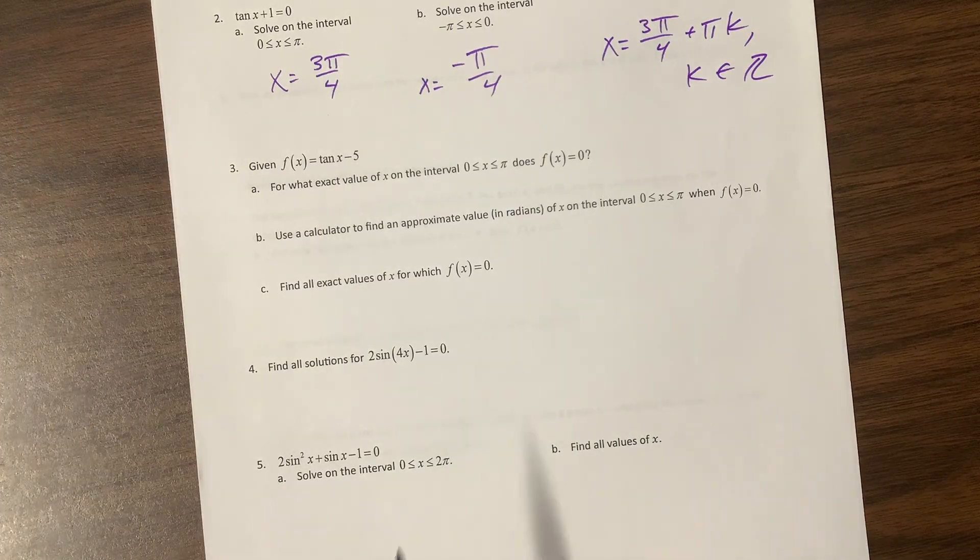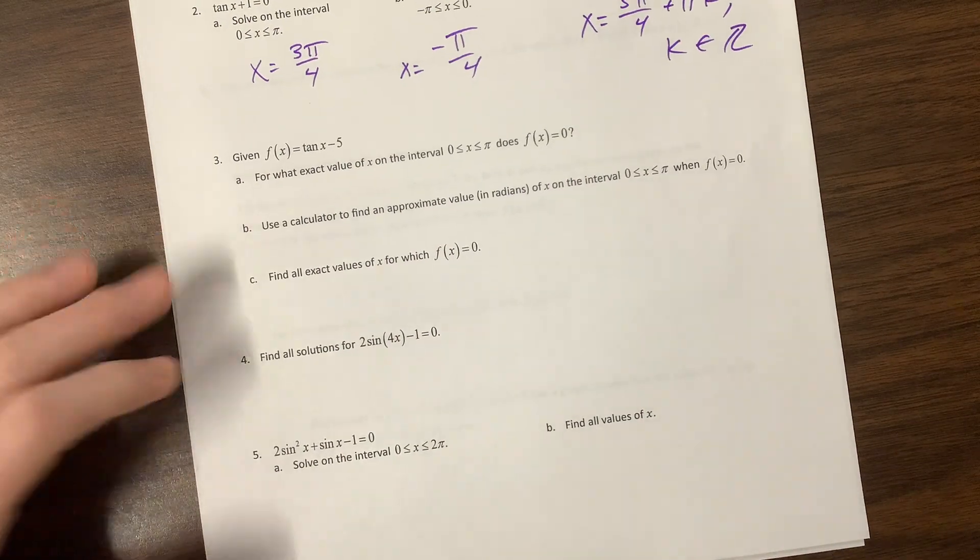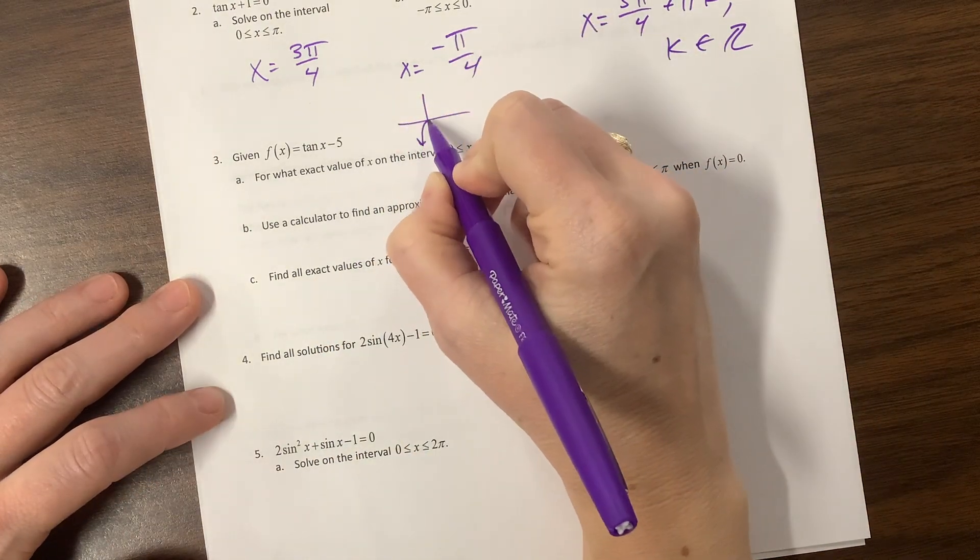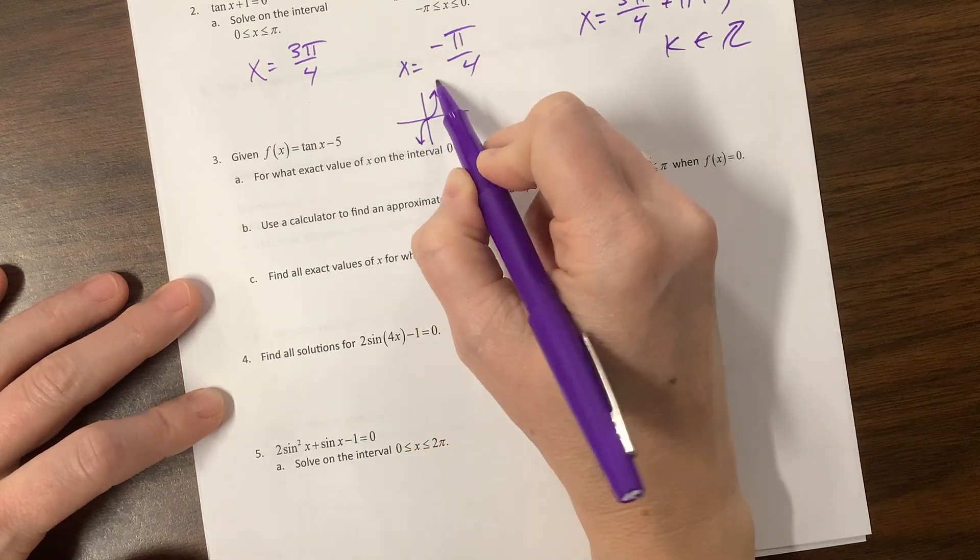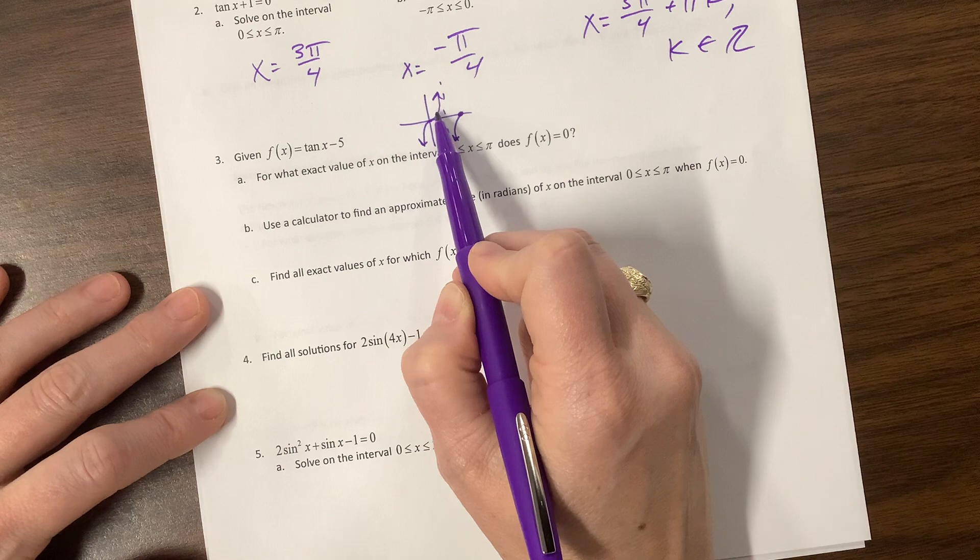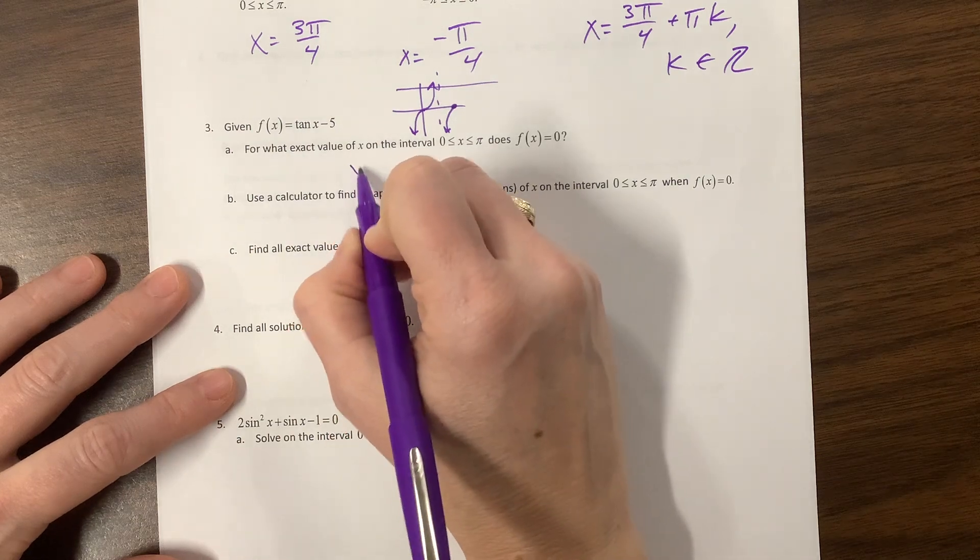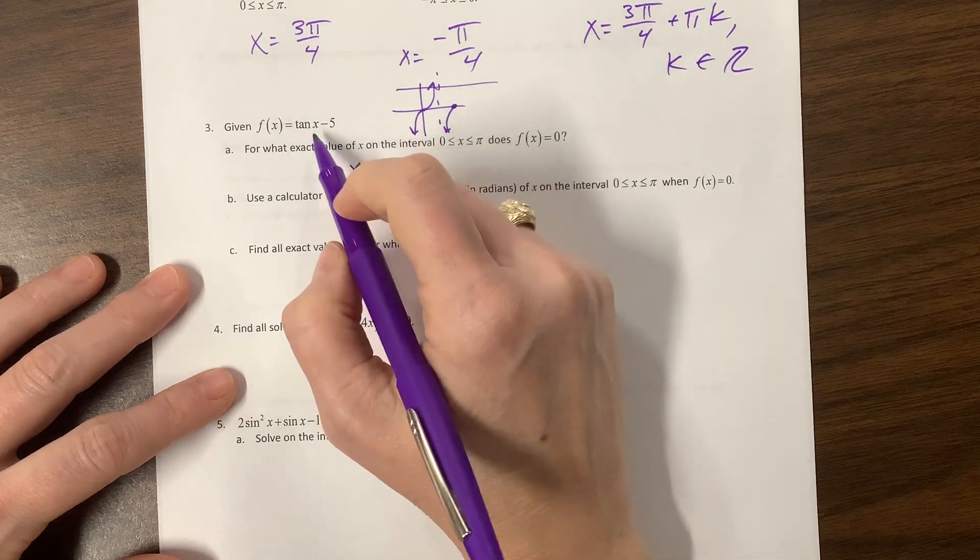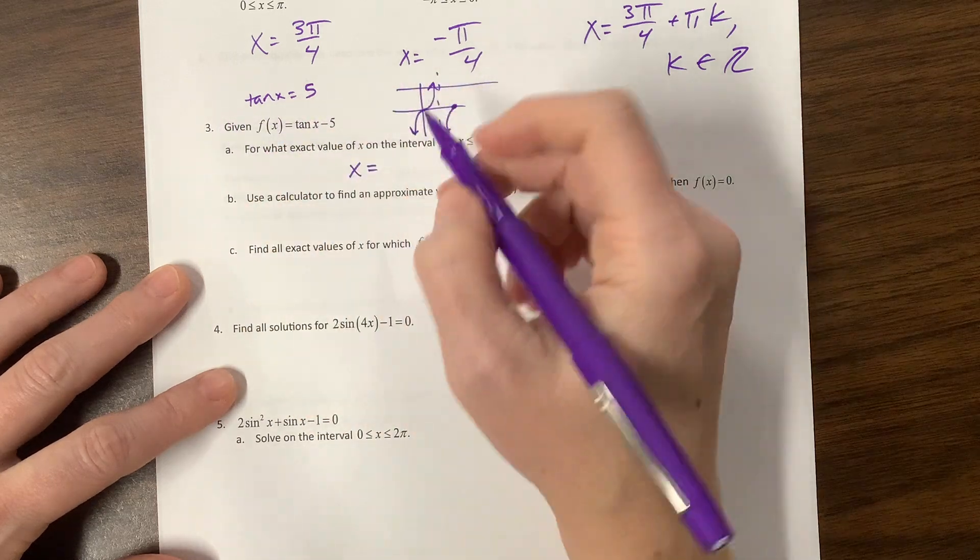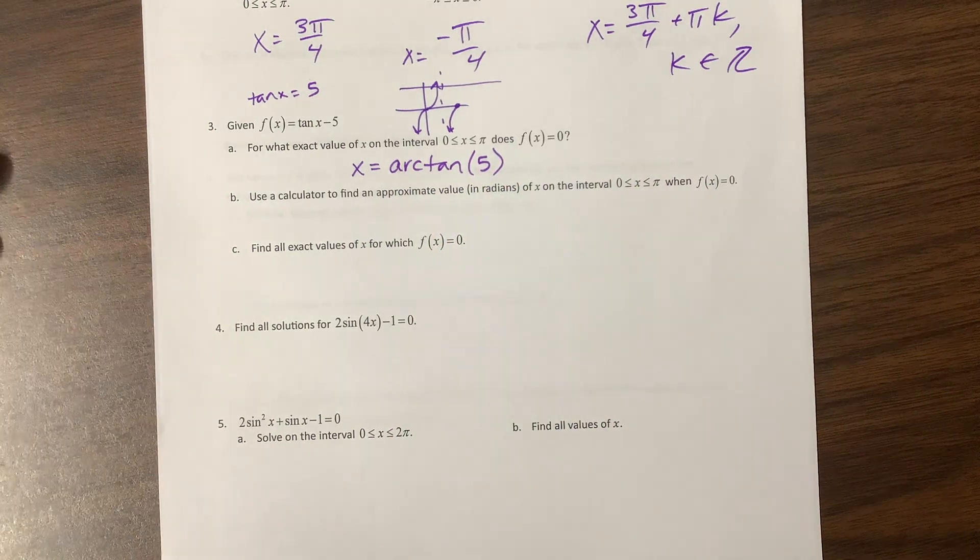Given f(x) = tan(x) - 5. For what exact value on that? So in our graph of tangent, tangent does something like this. So here's 0, this is π/2 is this first asymptote, and then here's π. So they want to know when does it equal 5? It's not something we know from the unit circle. So the exact value is that x is equal to, well, what we have here is we say tan(x) = 5. And so then we want to take the inverse tangent or the arc tangent of both sides. And so we'll say arctan(5). That's the exact value.